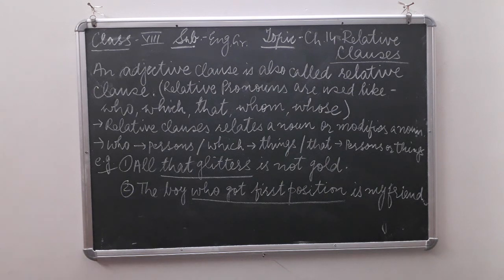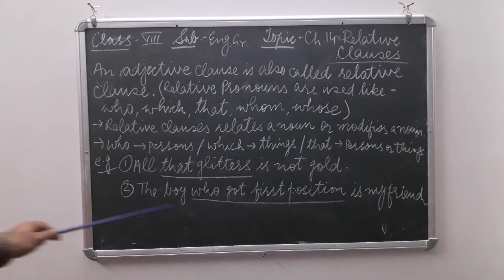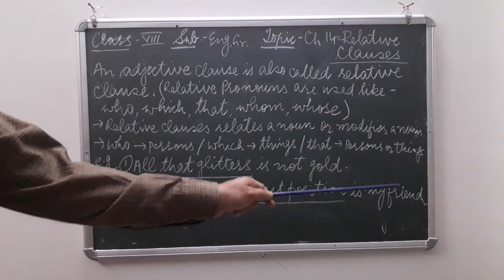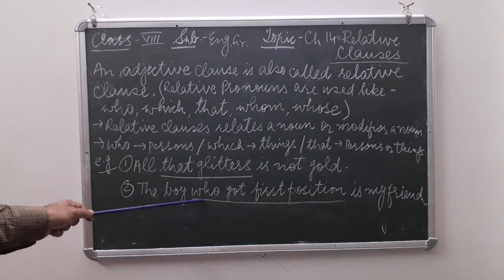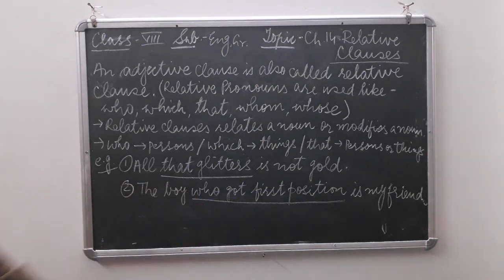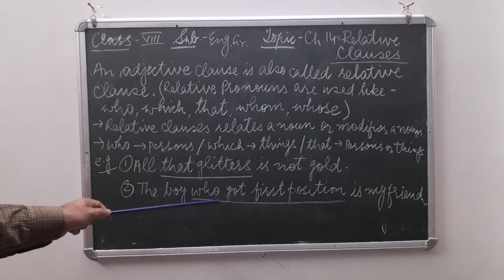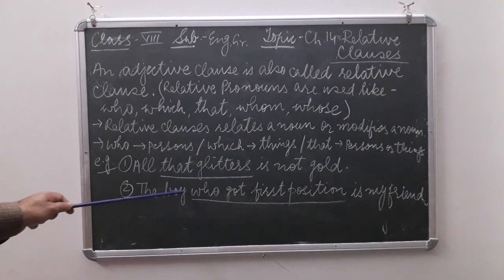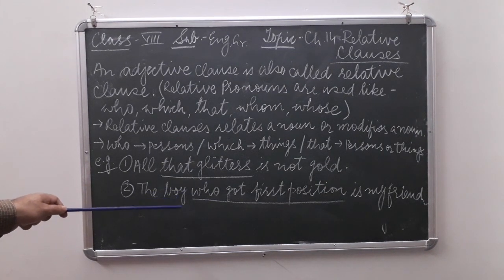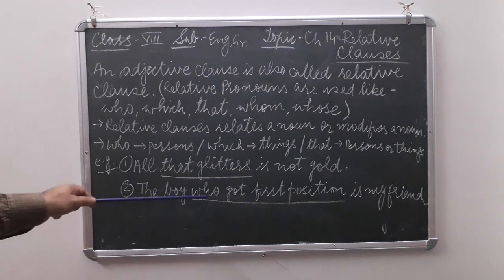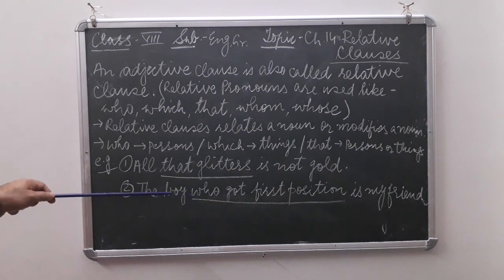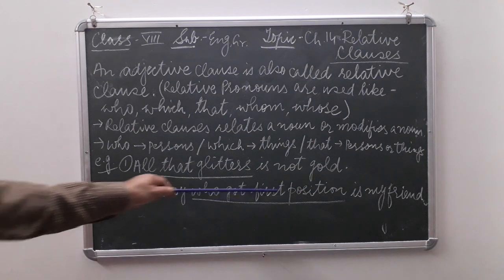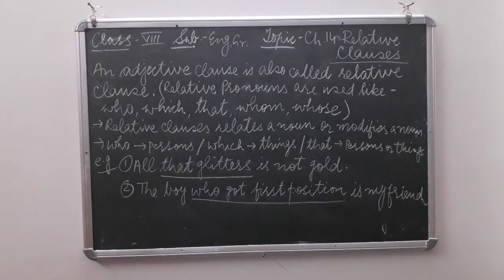Example two: 'The boy who got first position is my friend.' This sentence has two clauses. Clause one — the main clause — is 'The boy is my friend.' Clause two — the subordinate clause — is 'who got first position.' This is a relative clause because it relates and modifies the noun 'boy.' Which boy? The boy who got first position.